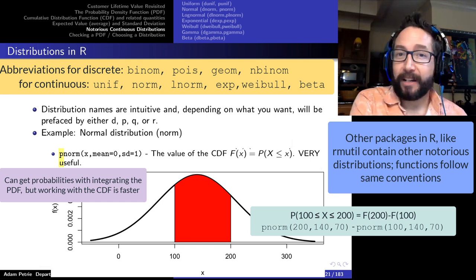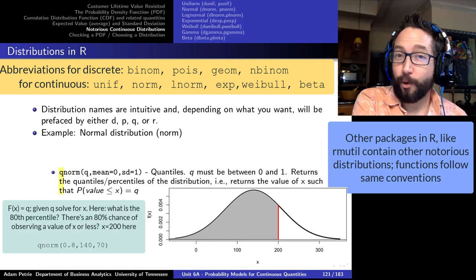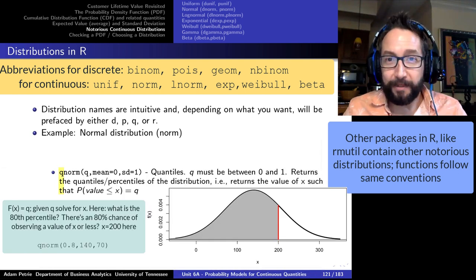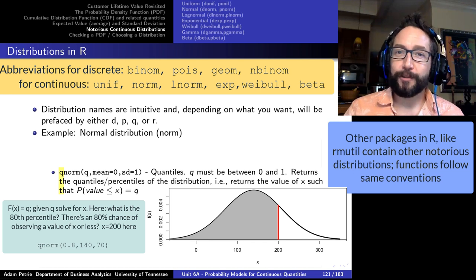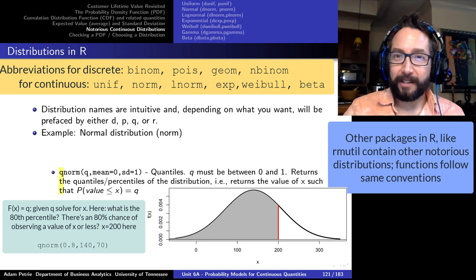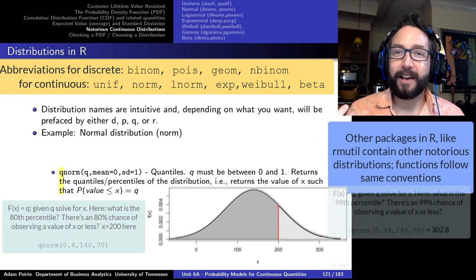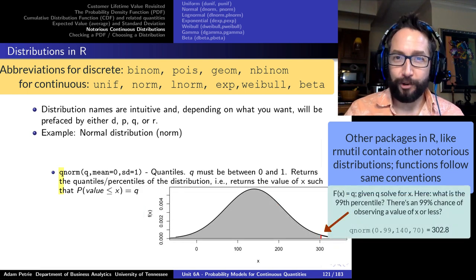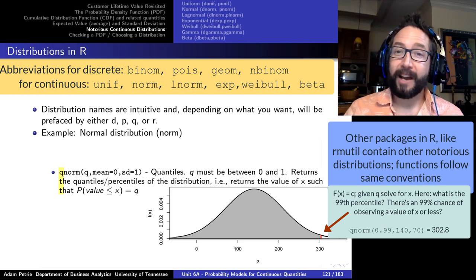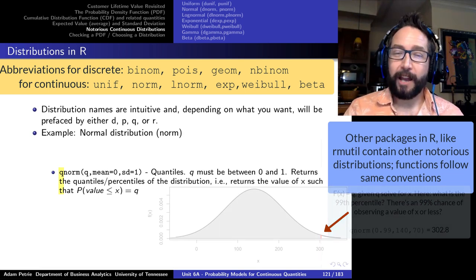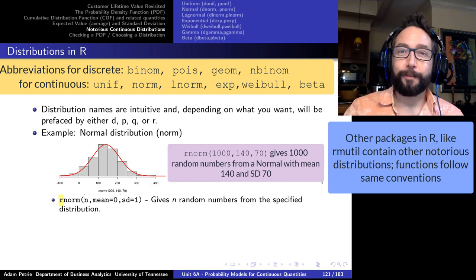The Q function allows us to find percentiles and quantiles — something we didn't do in discrete world but have seen the utility of for continuous distributions. If we have a demand distribution and want to know the 99th percentile, we ask for the Q version of that function evaluated at 0.99. Finally, prefacing with R gives us random numbers from that distribution — very useful for Monte Carlo simulations.